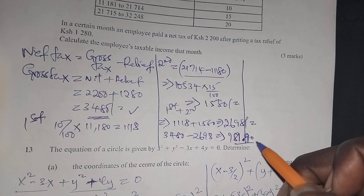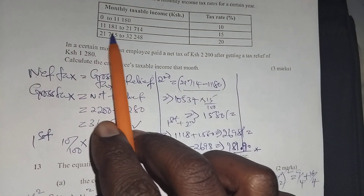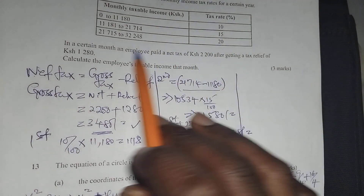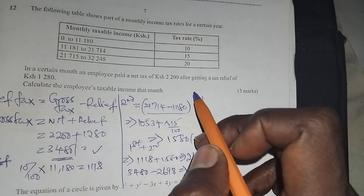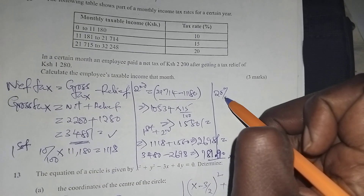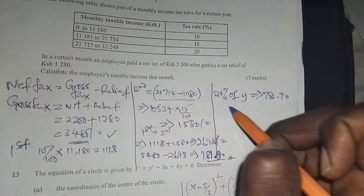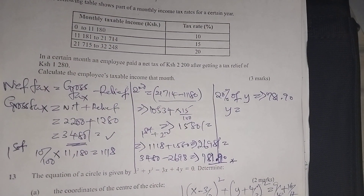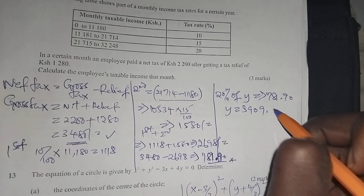This $781.90 came from the third band, and you need to determine that amount. On the third band, you are charging 20%. So 20% of that unknown amount Y equals $781.90. Therefore Y equals $781.90 divided by 20%, which gives you $3,909.50.